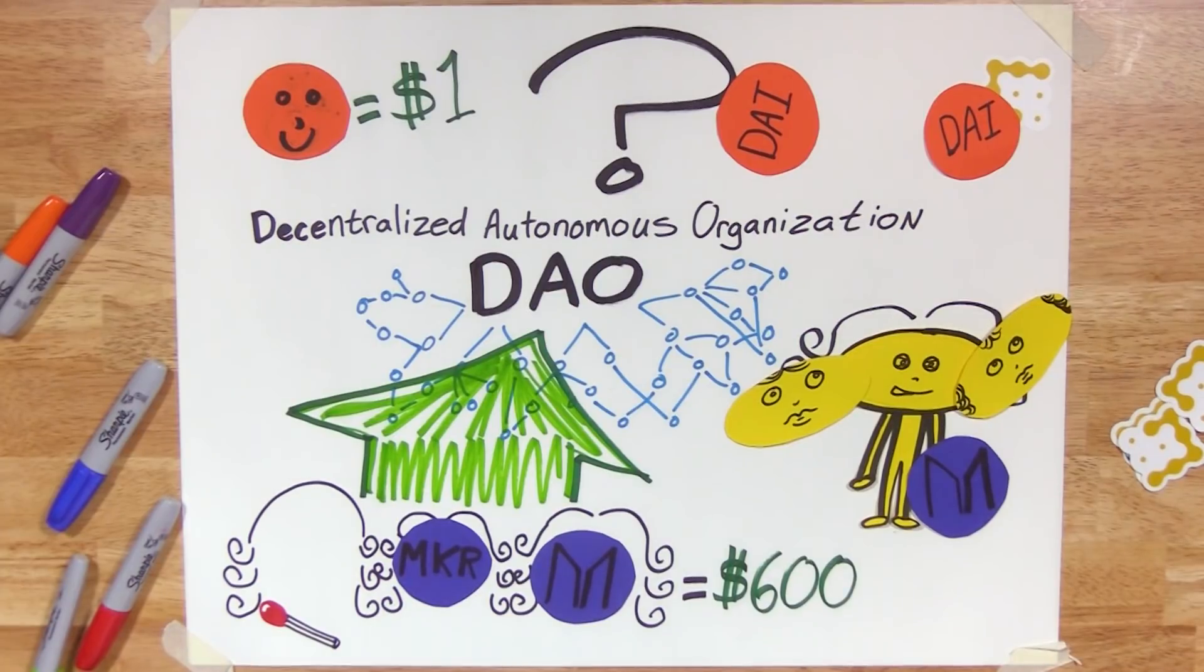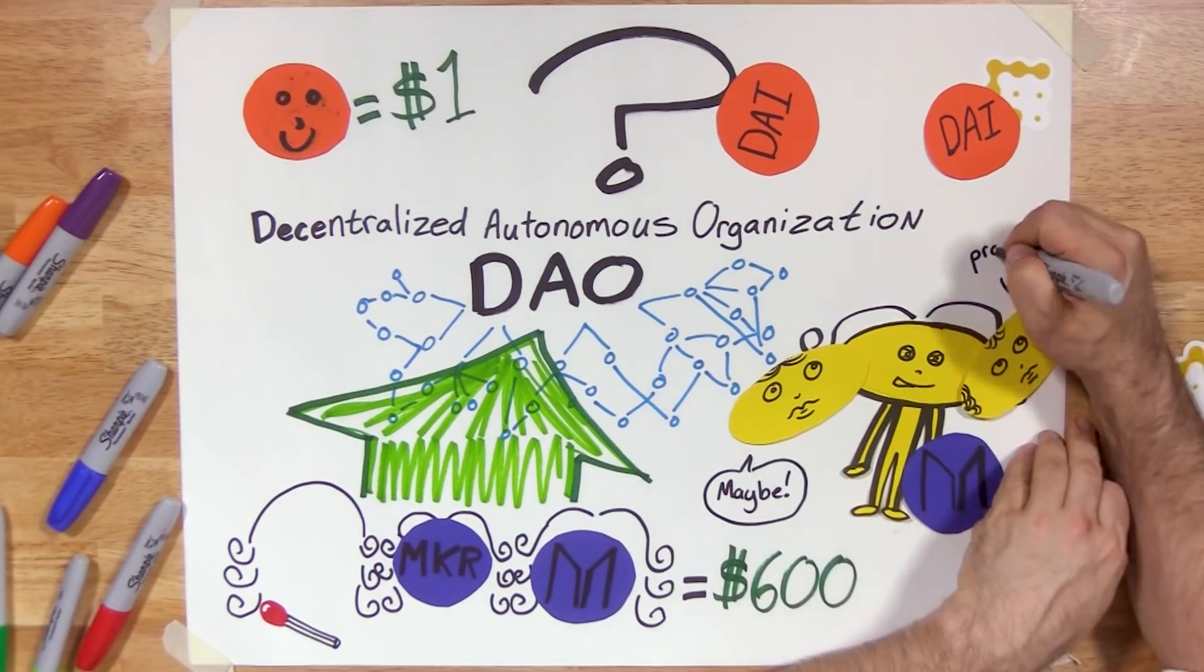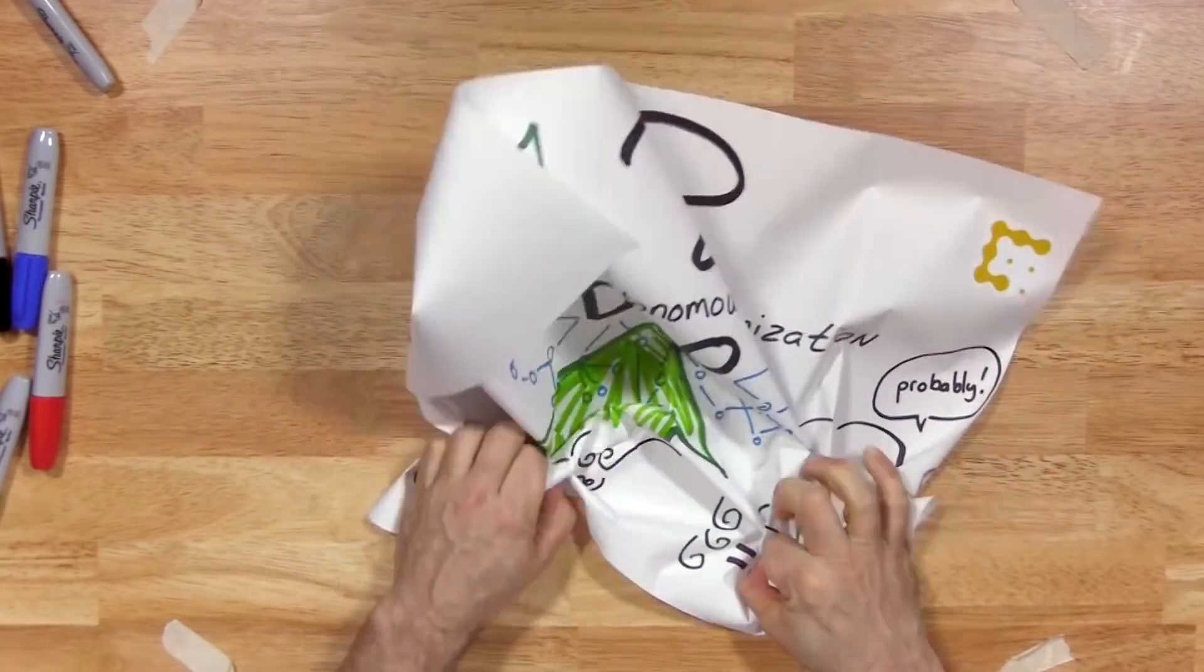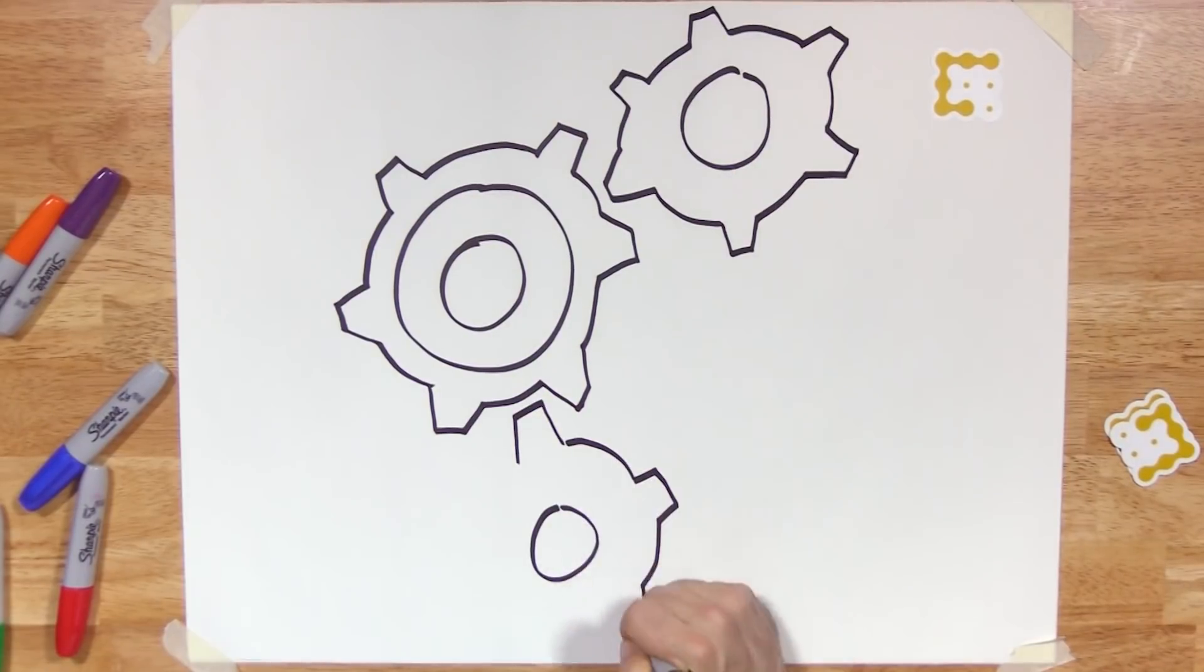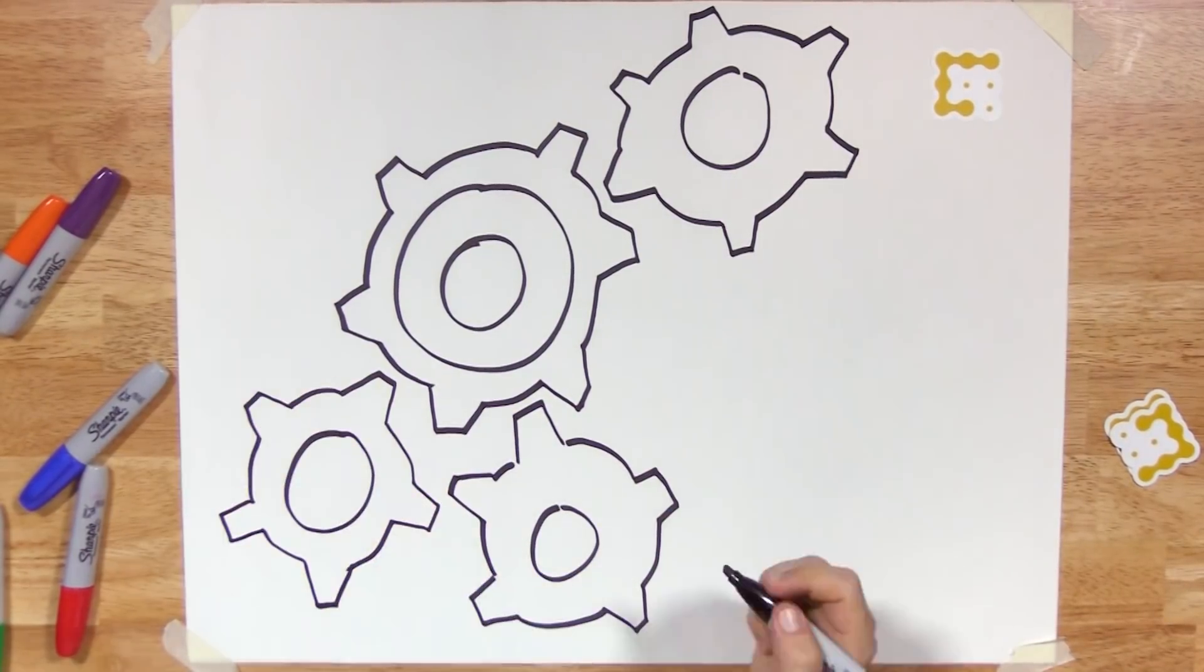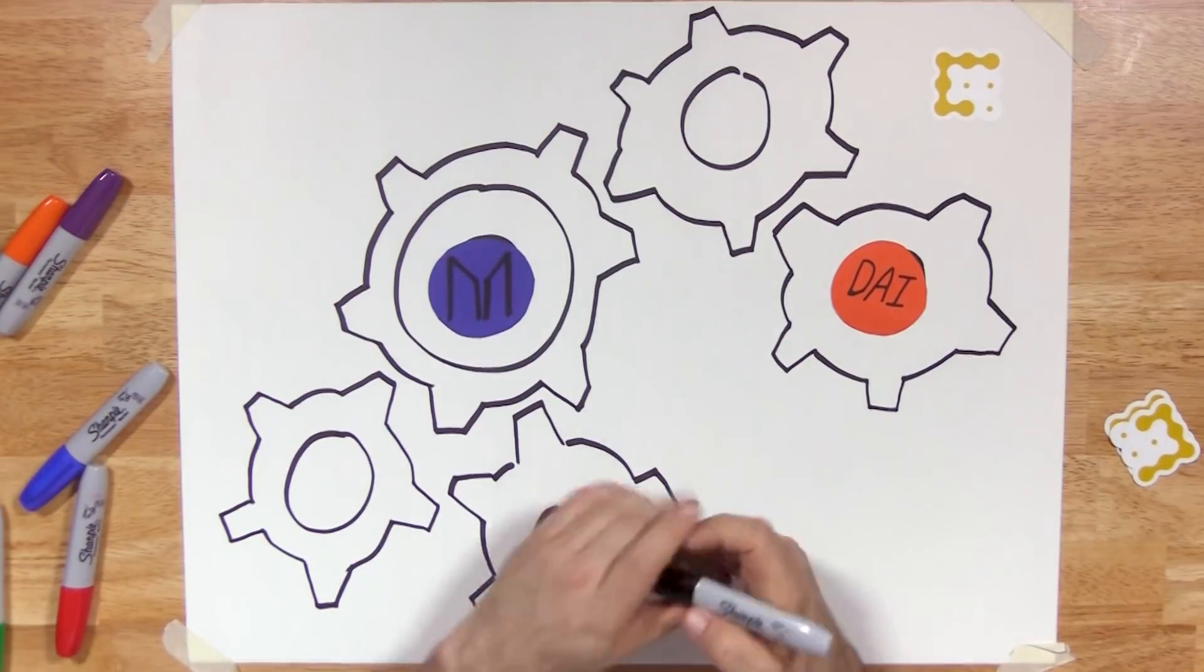What's more, MKR holders are now looking towards potentially lowering interest rates given that the price of DAI has increased. In that way, MakerDAO functions as one of the best versions of a decentralized autonomous organization the industry can point to so far.